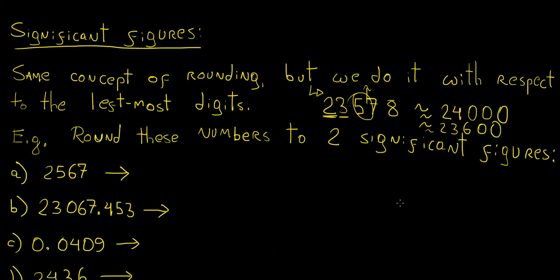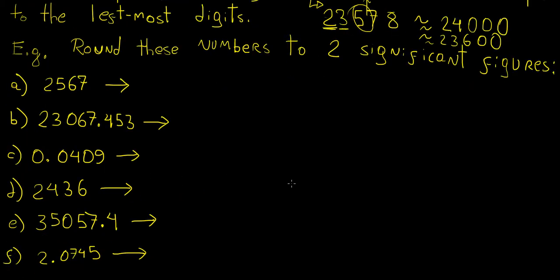Let's do some exercises rounding numbers to two significant figures. For the first number, significant figures means digits from the left-hand side, not counting leading zeros. We look at the number to the right of the second significant digit, which is 6 — closer to 10, so we round up. That digit becomes 0 and we add 1 to the previous digit, giving us 2600.